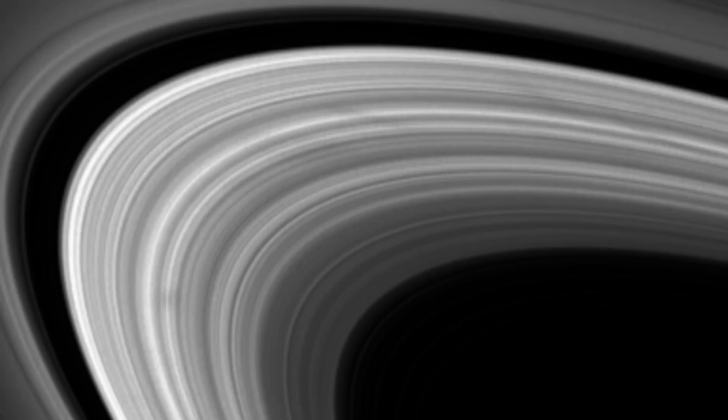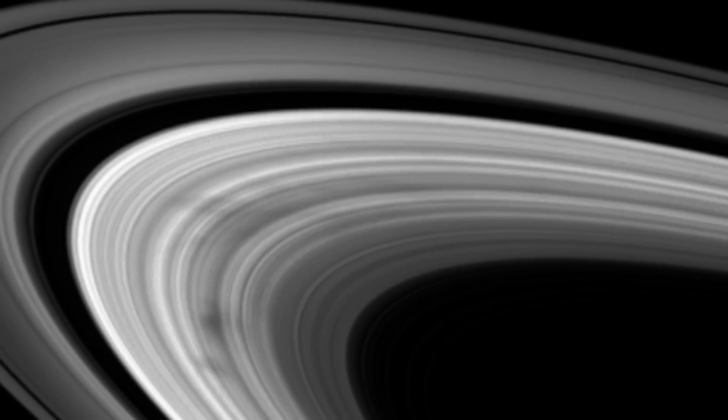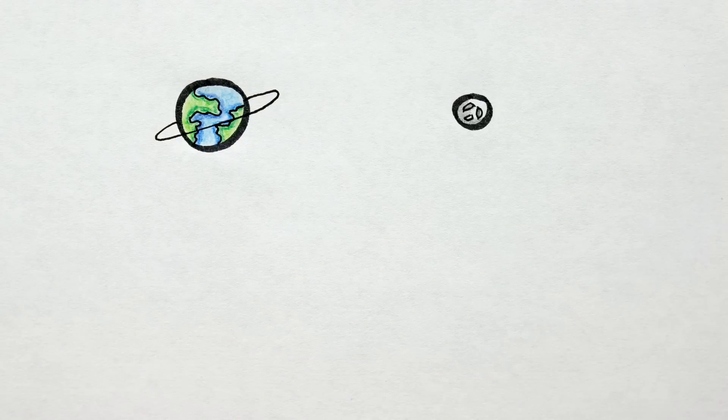Tides. Lunar tides might pull the Earth rings into a spoke configuration, akin to those seen on Saturn's rings. Now, I say luckily, but truth be told, the lunar tides are so strong they'll probably tear apart the rings.